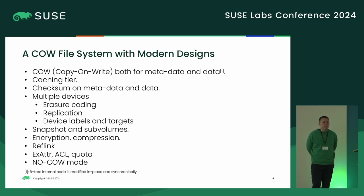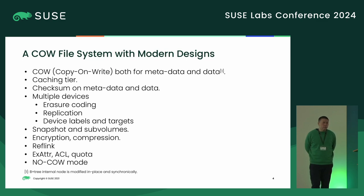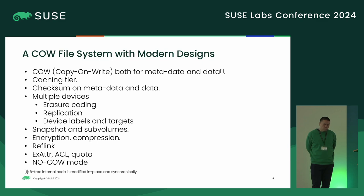The cache tier is the most distinguished part from other existing file systems. BcacheFS does checksum on both data and metadata, and of course it supports multiple devices. With multiple device support, BcacheFS can do erasure coding and replication.